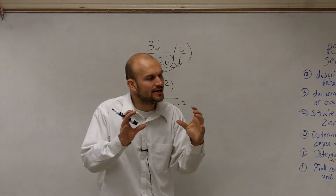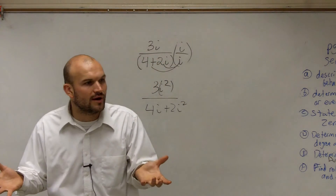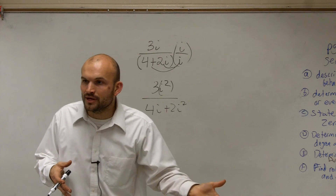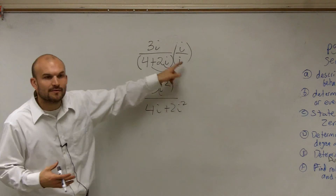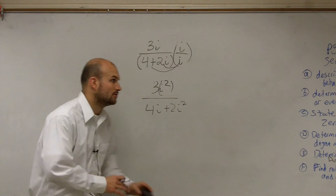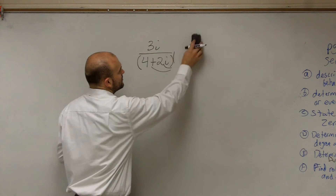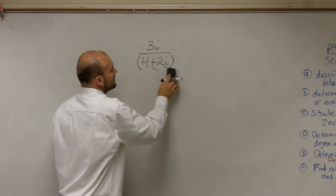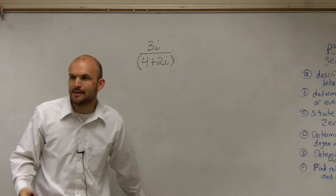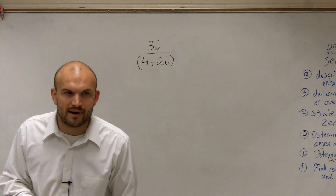When you had a monomial, you can multiply by i over i. But now when you have a binomial, you can't just multiply because you have to apply the distributive property. So let's take a look at what else we could do. How can I get rid of the i as my divisor — how can I get rid of this i on the bottom?